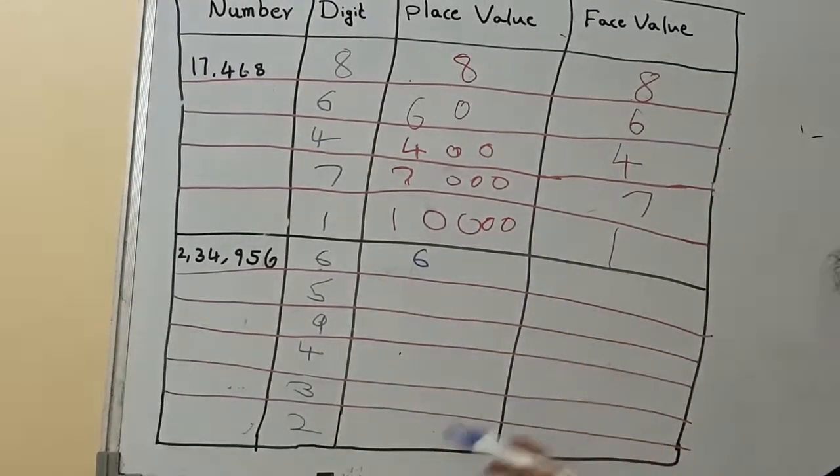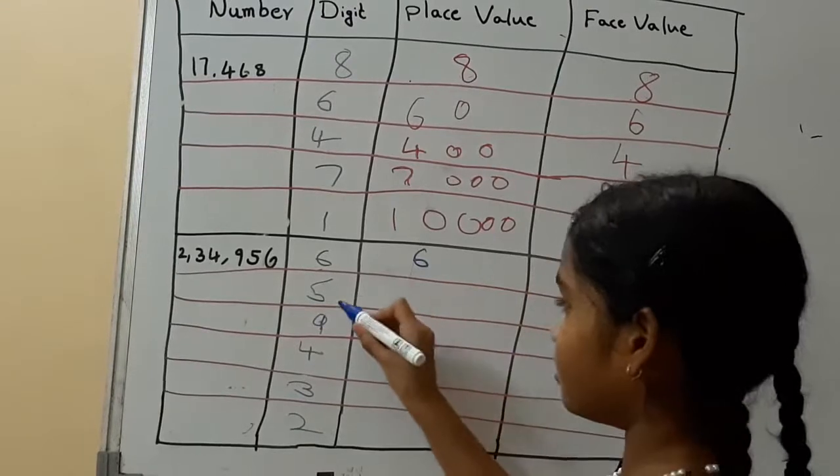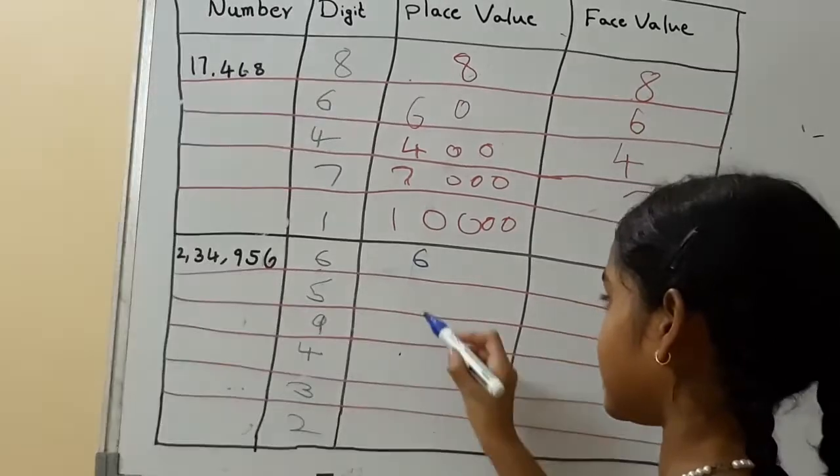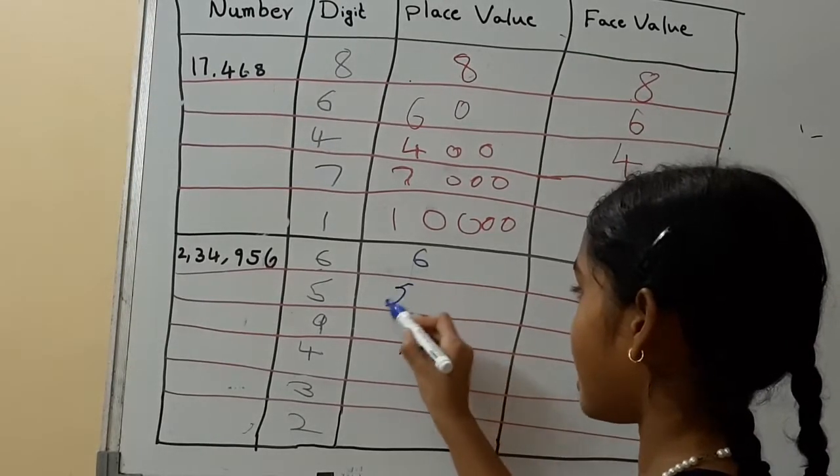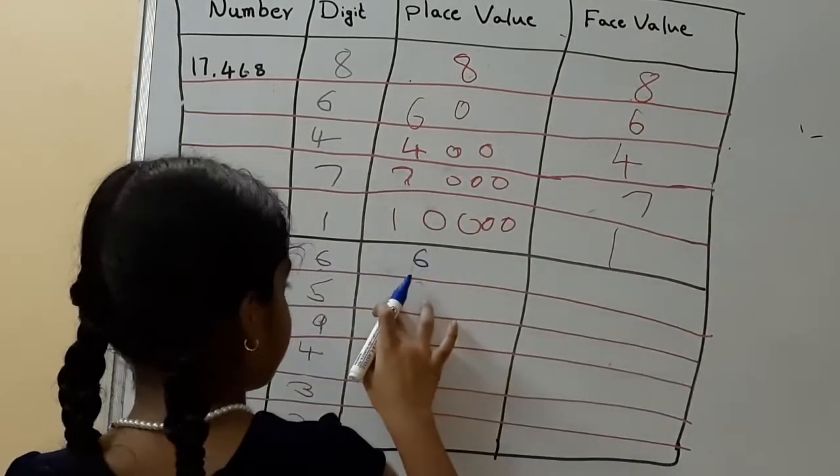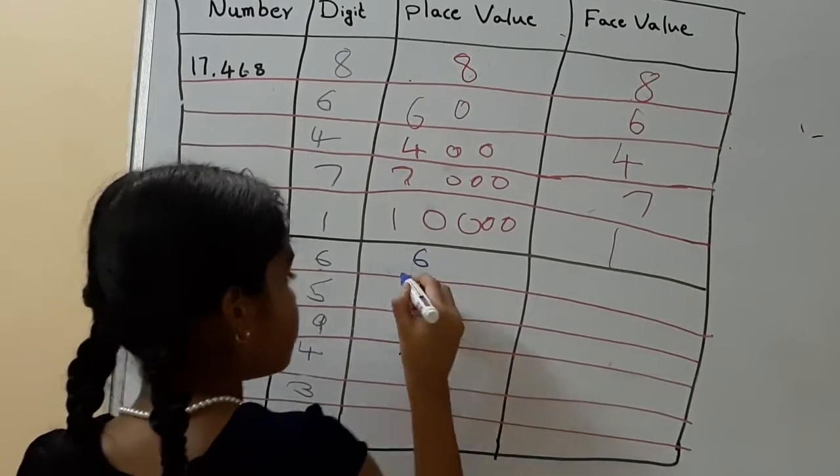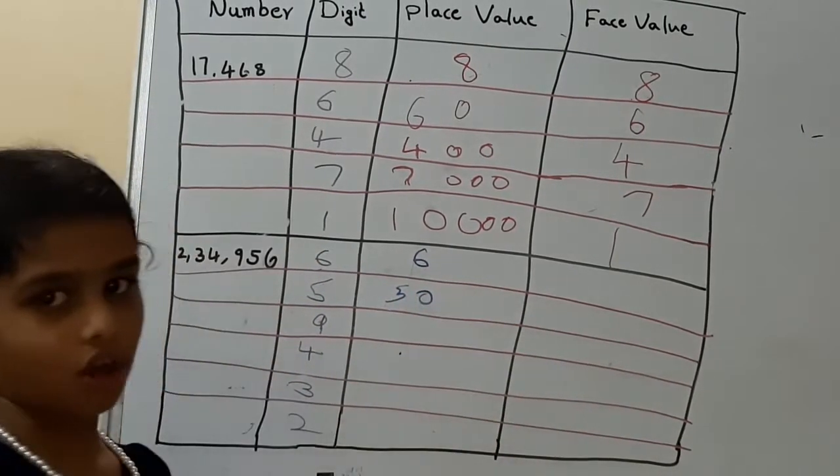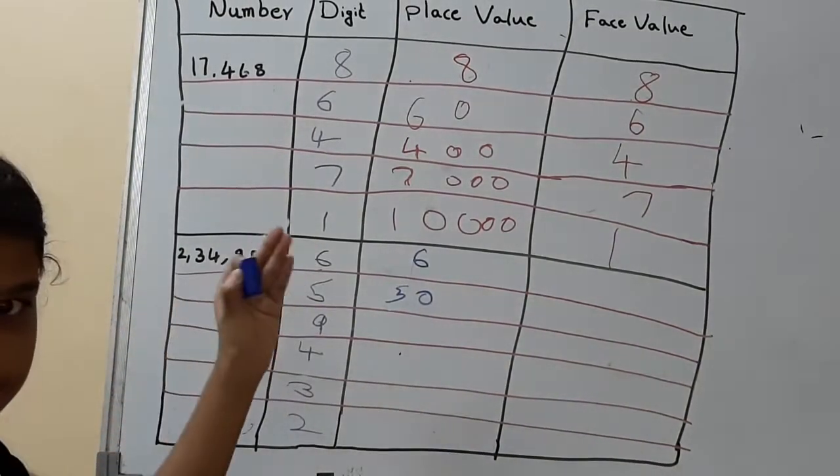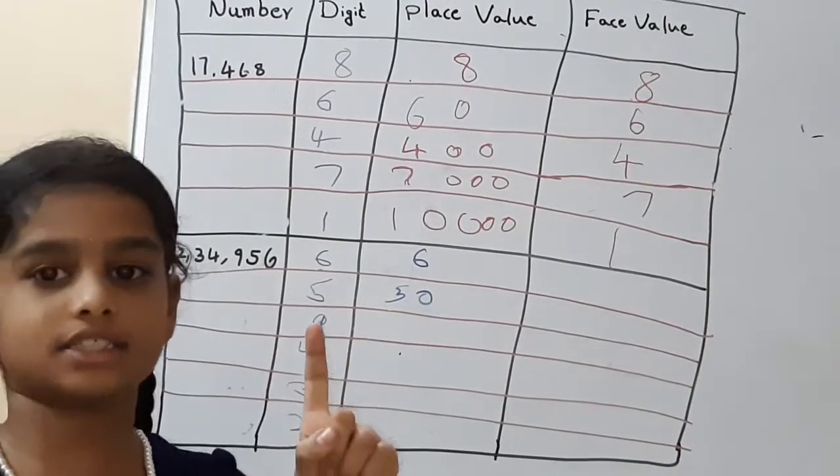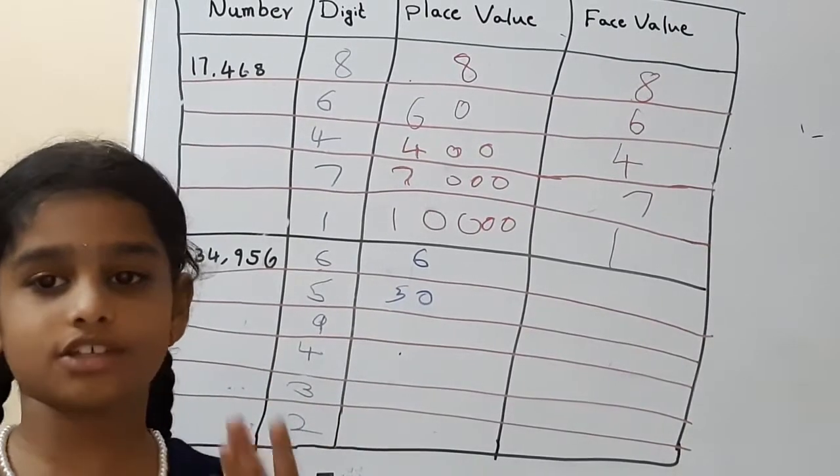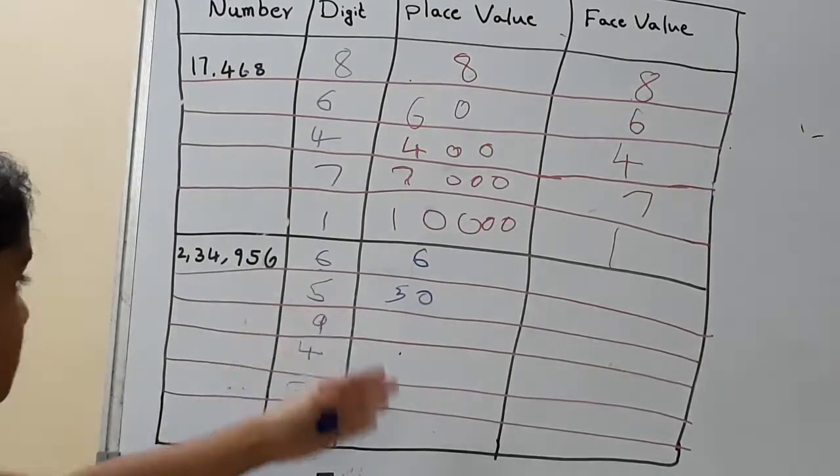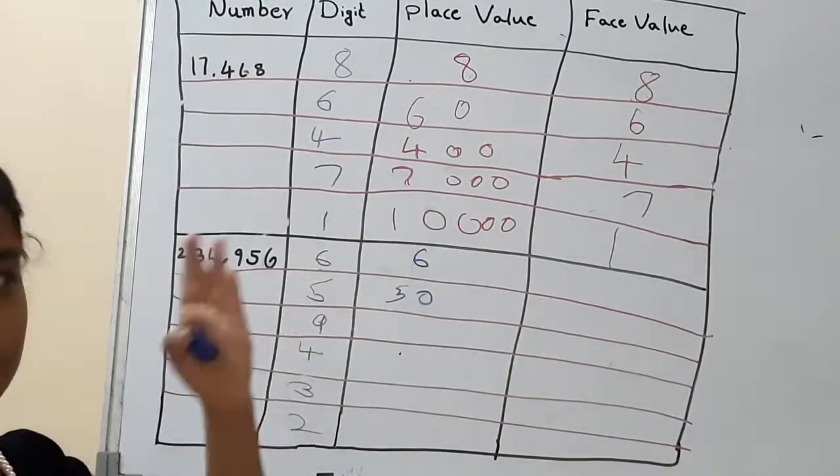What is the place value of 5? It's in the tenth place, so we'll keep 5 and we'll keep one 0 because it's tenths. And the tenths will have one 0. How many zeros are there in 10? Only one 0, so that's why we get only one 0.